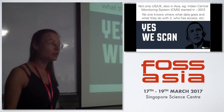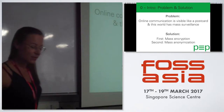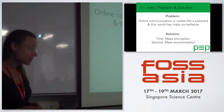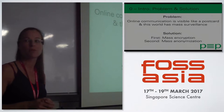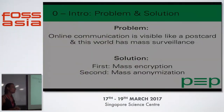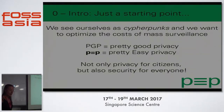I'm pretty sure Singapore can also tell quite a story about this. The problem is most communication online is visible like a postcard, and this world has mass surveillance. So what we need is mass encryption — but that's also just a starting point, because encryption is not everything; we also need to anonymize all the metadata. We see ourselves as cypherpunks and want to optimize the costs of mass surveillance, rolling out mass encryption for privacy for citizens and security for everyone.